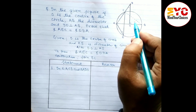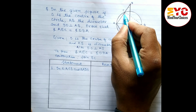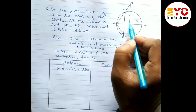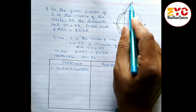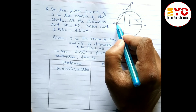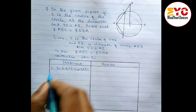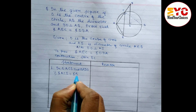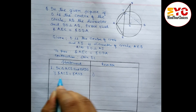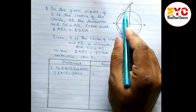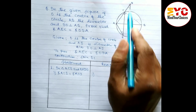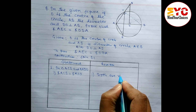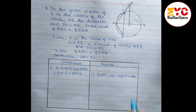First, both triangles have a right angle. Angle AOD is 90 degrees, and angle ACB is also 90 degrees — both are right angles. So in statement 1, we write: angle ACB equals angle AOD, and the reason is both are right angles.